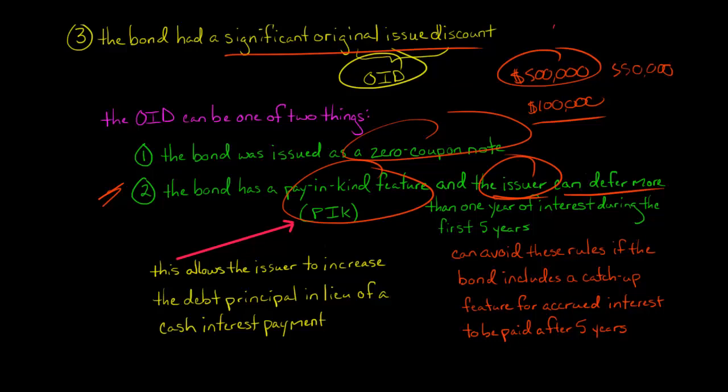Now, it gets a little more complicated because actually, if a company was worried, the issuer says, oh, well, wait a minute, now I'm not going to be able to take tax deductions for its interest because I've got this pay-in-kind feature, what they can do...